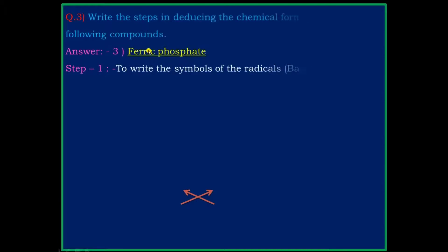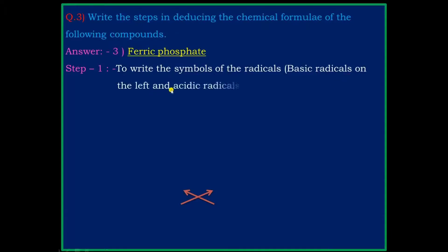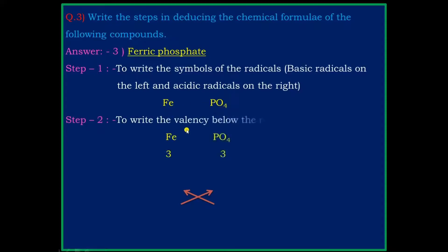Question 3: Ferric Phosphate. Step 1: write the symbol of the radical — basic radical on the left and the acidic radical on the right. The symbol is Fe for ferric and PO₄ for phosphate. Step 2: write the valency below the respective radicals — the valency of Fe is 3 and the valency of PO₄ is 3.